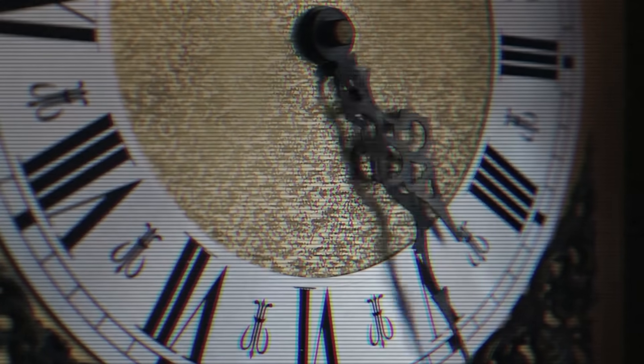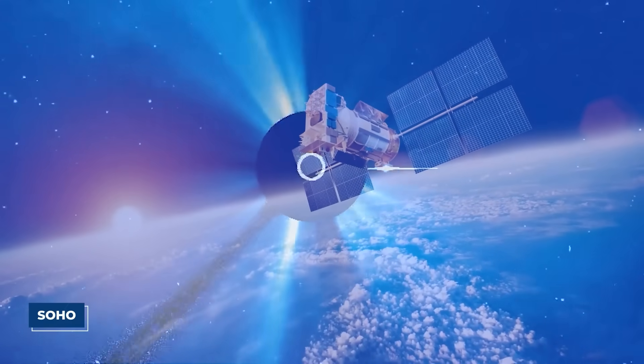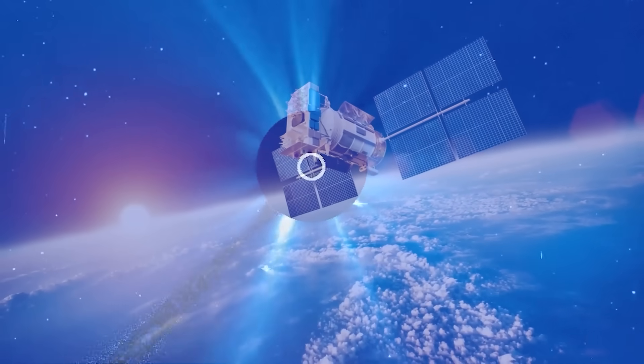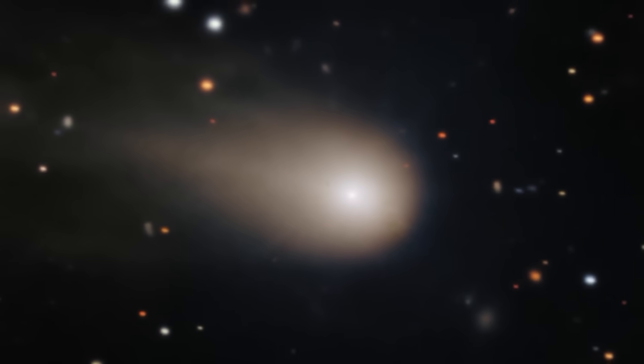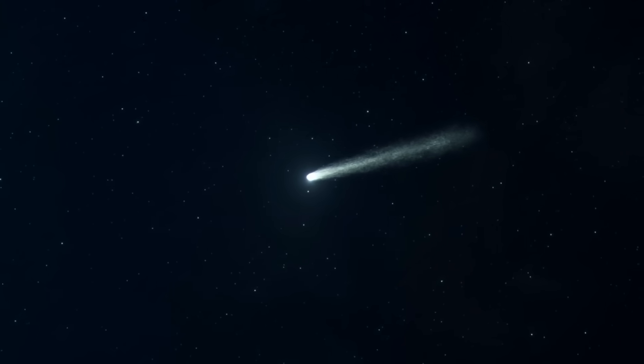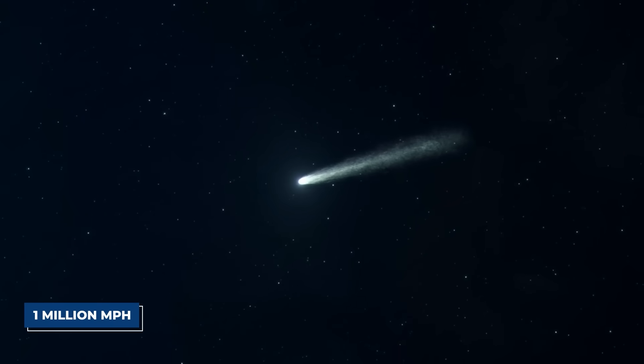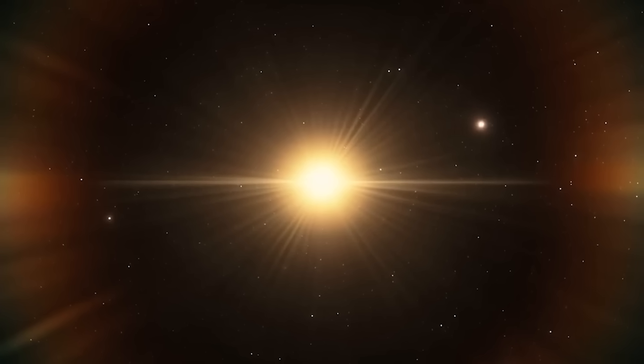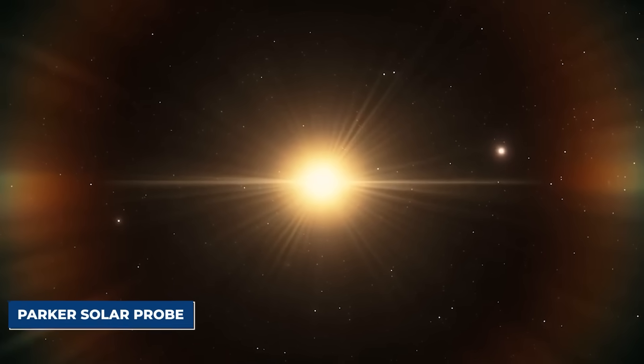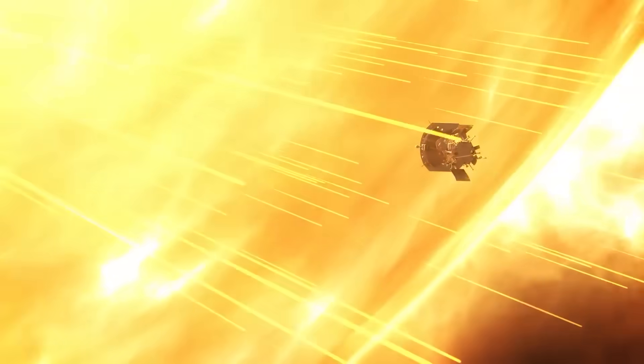At 8:03 UTC, the SOHO spacecraft's plasma sensors detected a massive bow-shaped disturbance downstream from an interstellar comet known as 3I Atlas. It was as if the solar wind, a river of charged particles flowing at over 1 million miles per hour, had just slammed into an invisible wall. Just two minutes later, the Parker Solar Probe, designed to fly into the sun's corona, registered a sharp, violent spike in the local magnetic field strength.